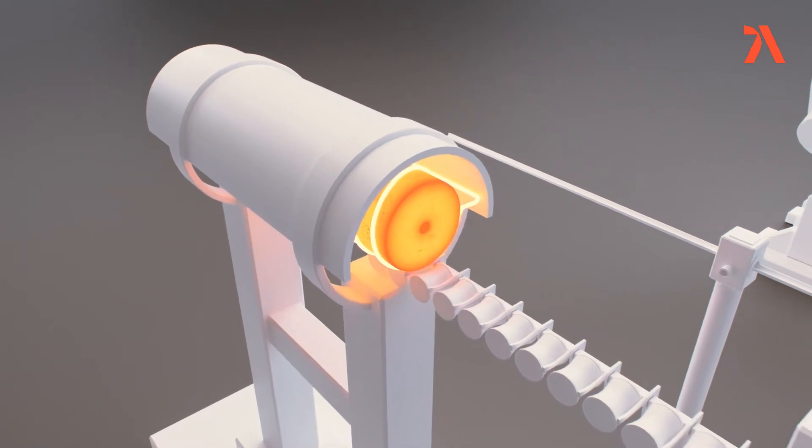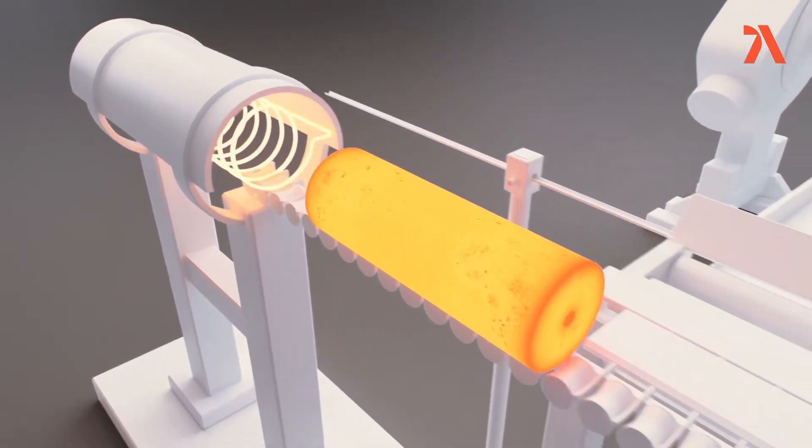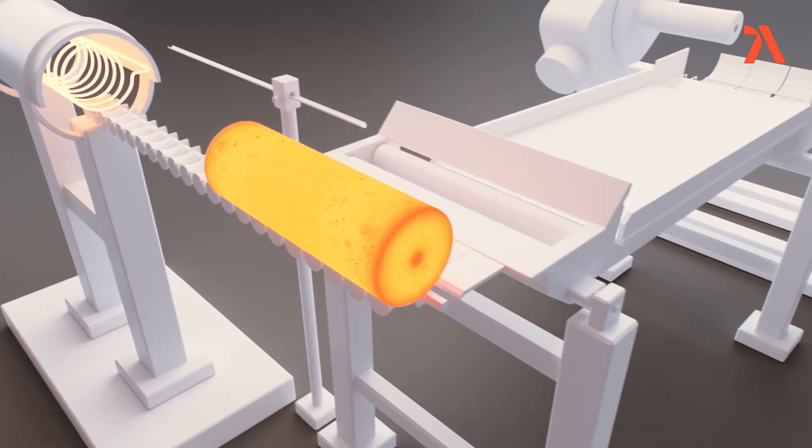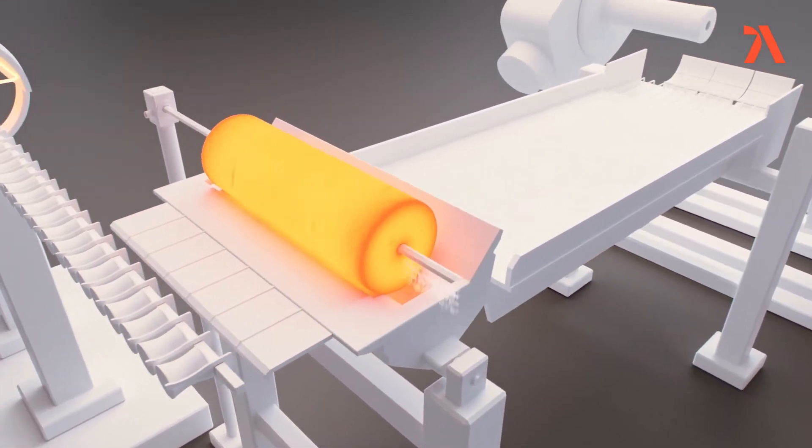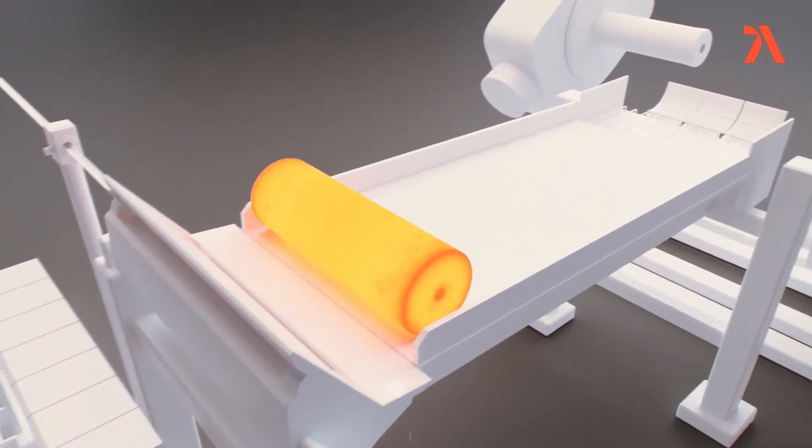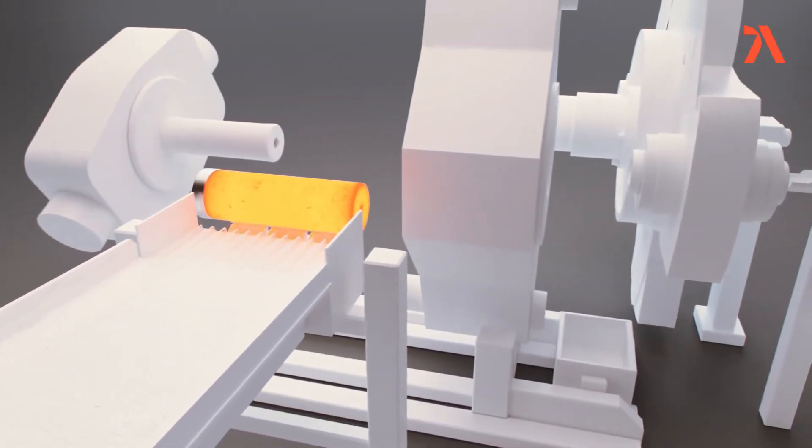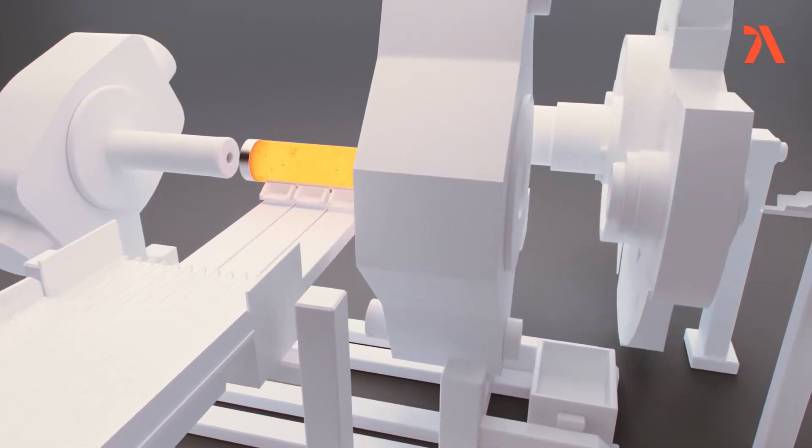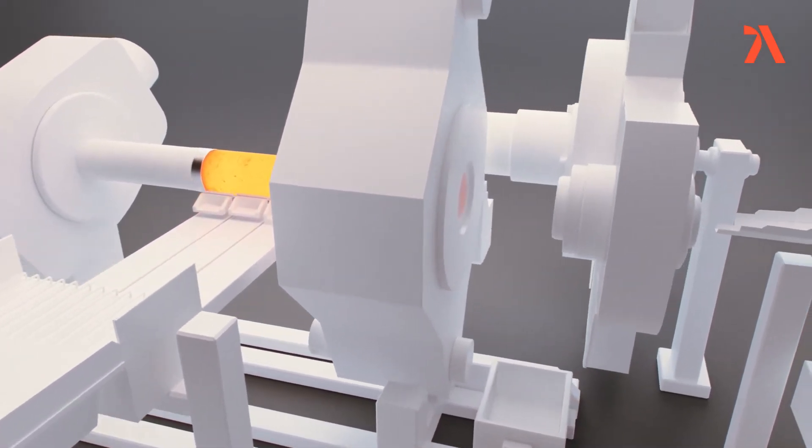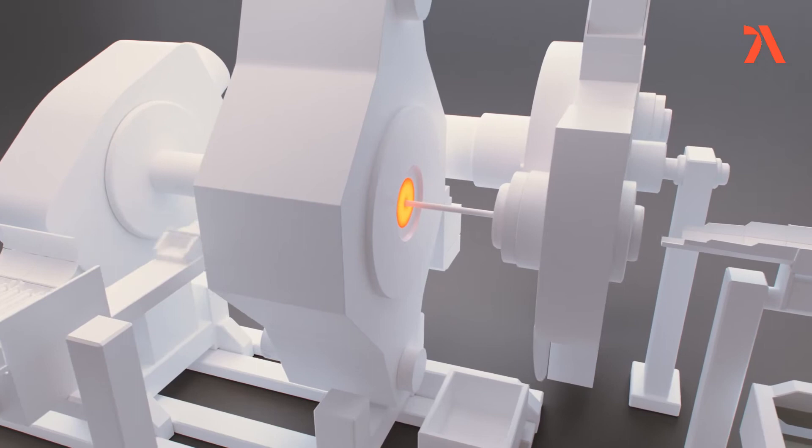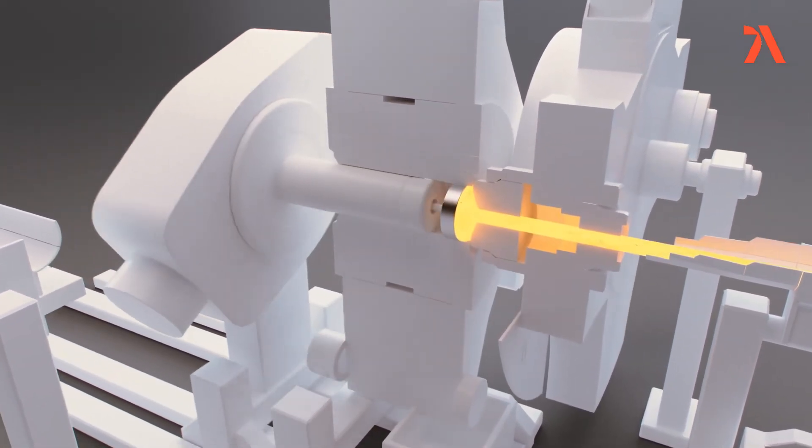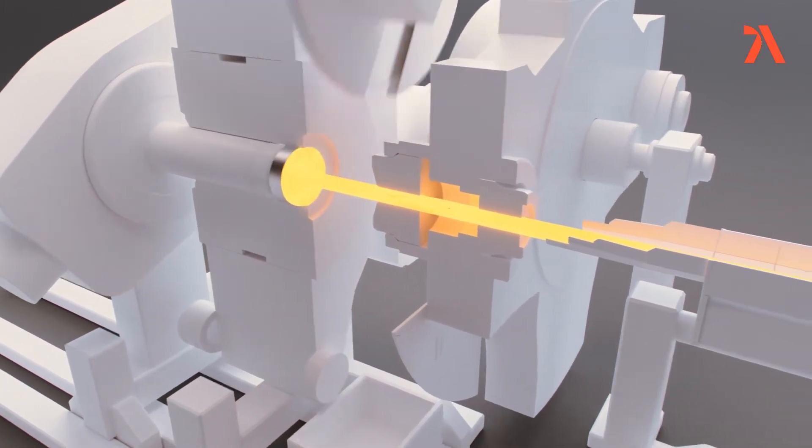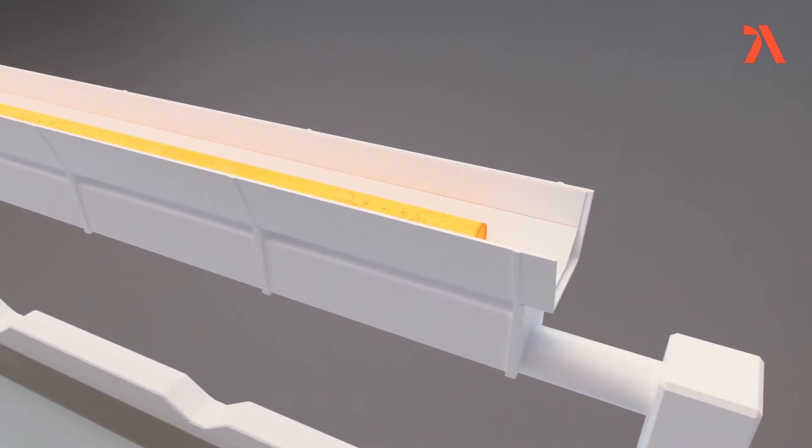The extrusion billets are heated to about 1200 degrees Celsius and then lubricated internally as well as externally with glass powder. A mandrel is inserted into a hole in the billet. During extrusion, the billet is pressed out between the dye and the mandrel, resulting in a seamless tube called a hollow. The hollow is used as the starting material for further processing.